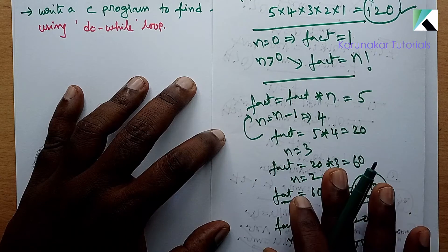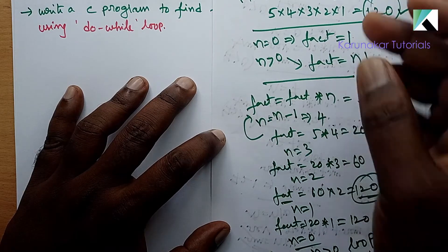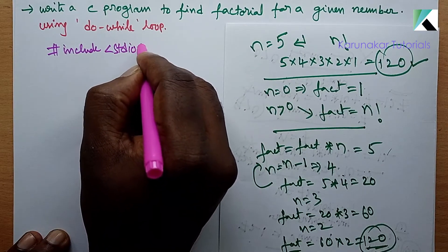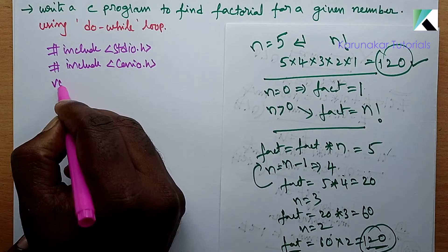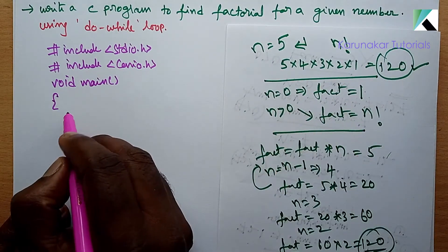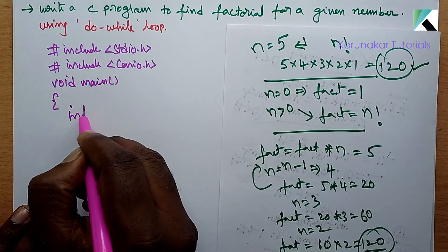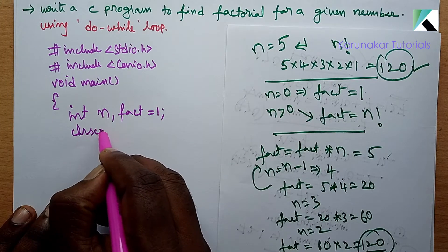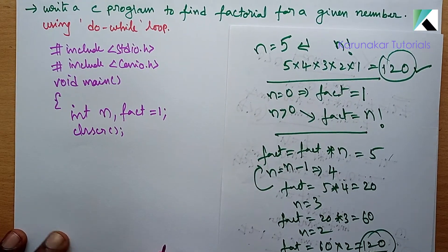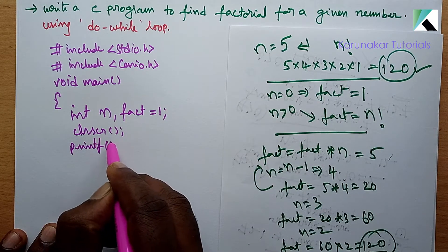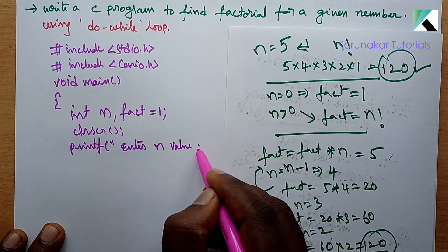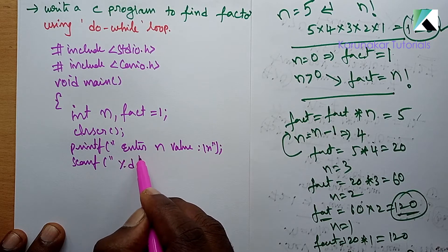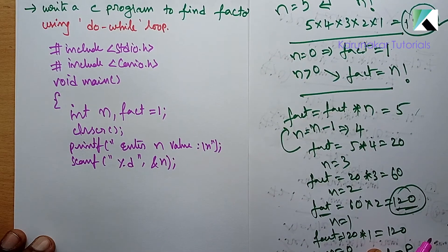Okay, so this is the logic part. Now we need to execute the program, we need to write the code. Do-while: first write the code, then write the condition. Let's show one by one in the program. hash include stdio.h, hash include conio.h, void main. After that, what variables are required? n and fact are needed. int n, fact is equal to 1. After that, clrscr. Then read a number whose factorial we need to find out. printf enter n value.